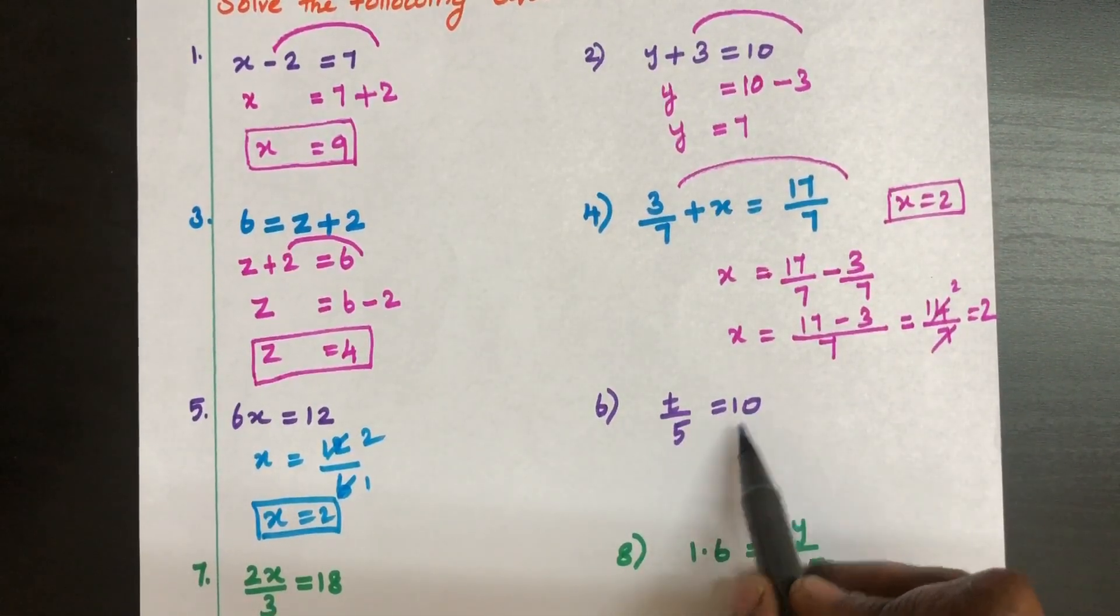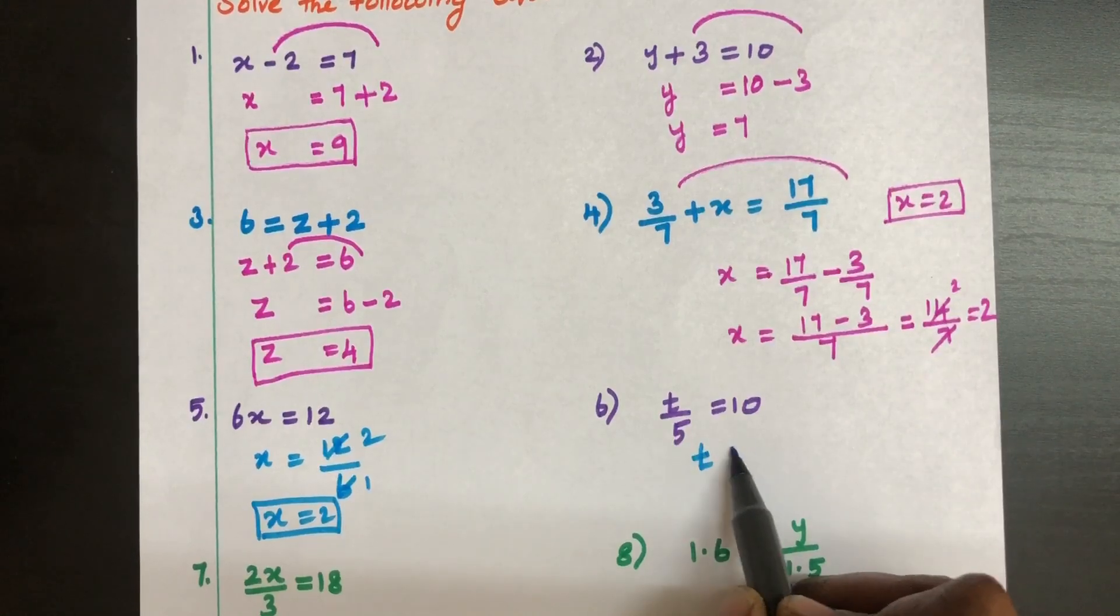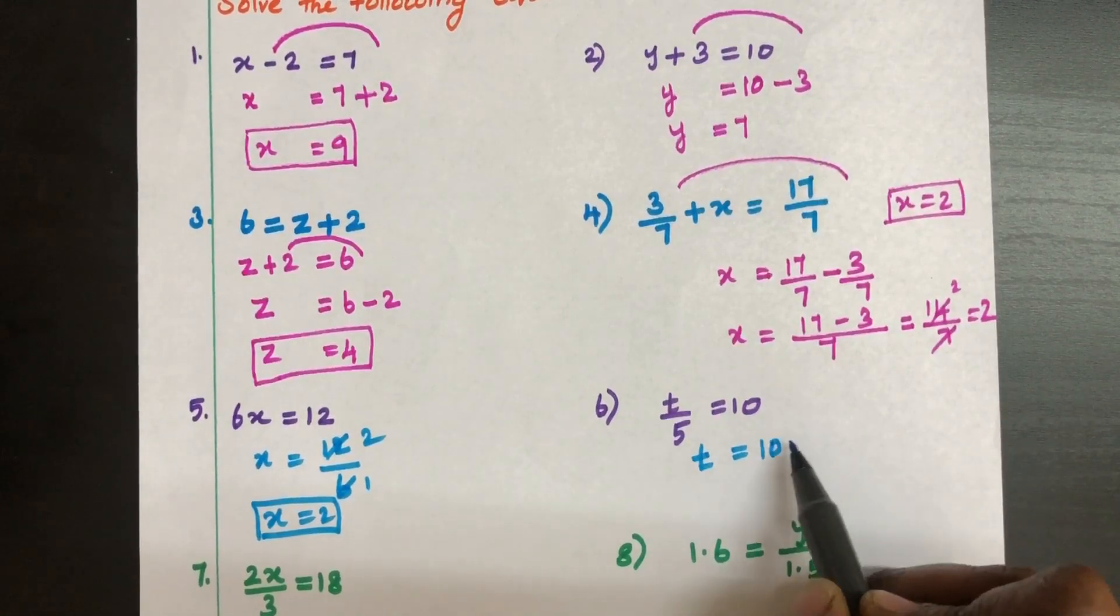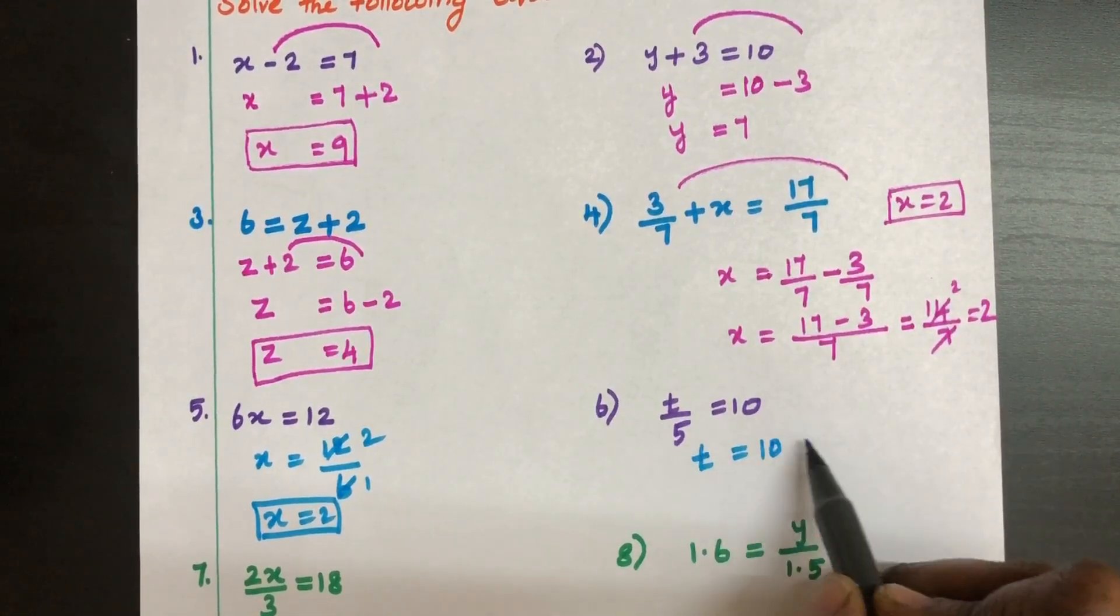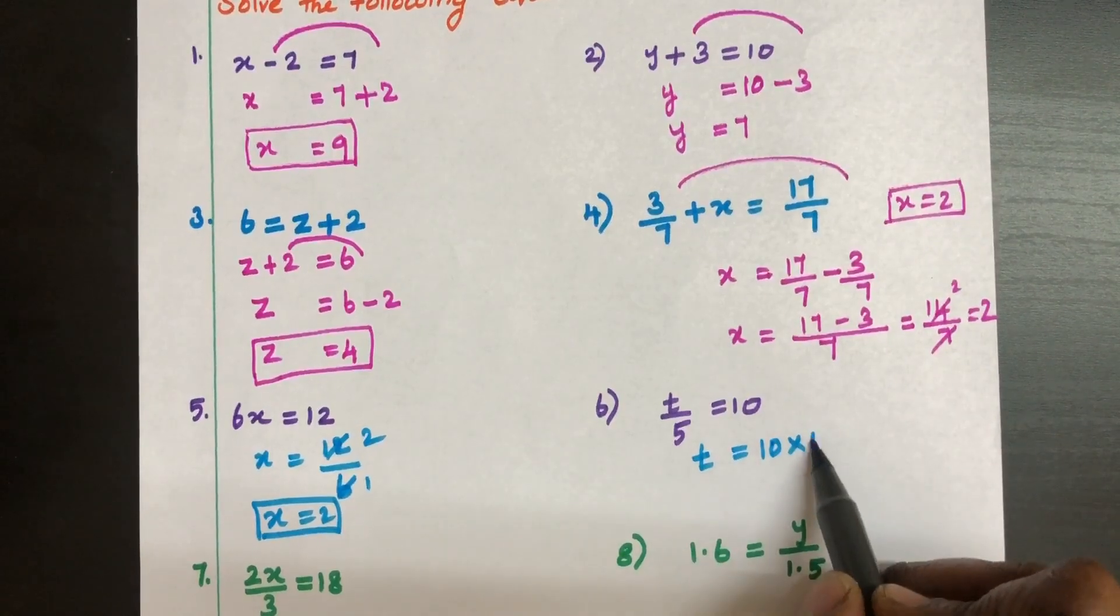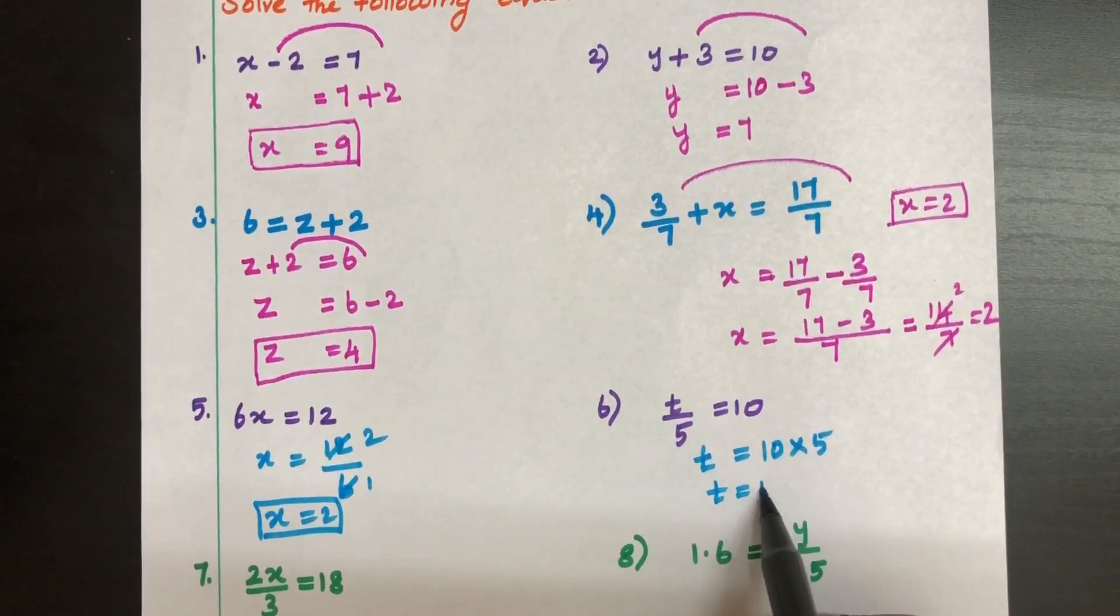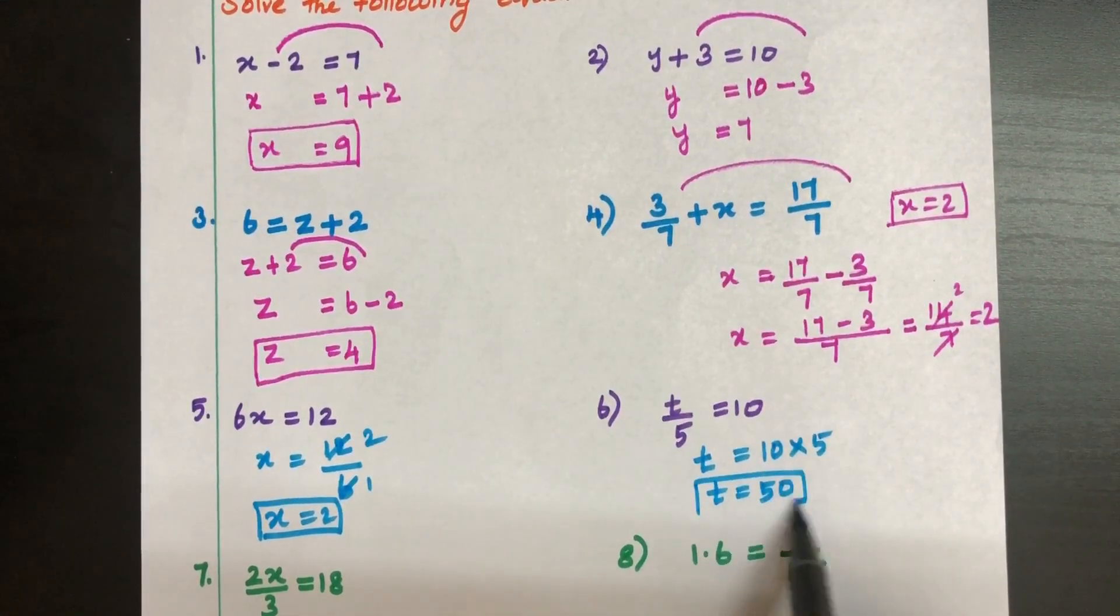Here T by 5 is equal to 10. Have T left side. By using division formula, cross multiply will happen. 10 into 5. So T is equal to 50. This is the answer.